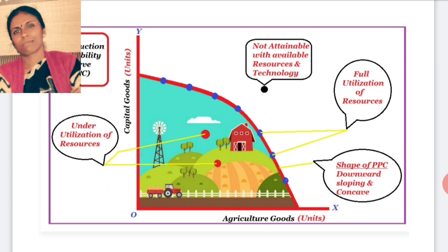Below the curve means the resources of the country are not fully used — that means underutilization of resources. It means there is a scope to attain the production possibility curve, which is a good chance. Opposite of this, full utilization of resources throughout the curve means the resources of the country are fully utilized. And beyond the curve, it is not attainable with available resources and technology given. The shape of the production possibility curve is downward sloping and concave.